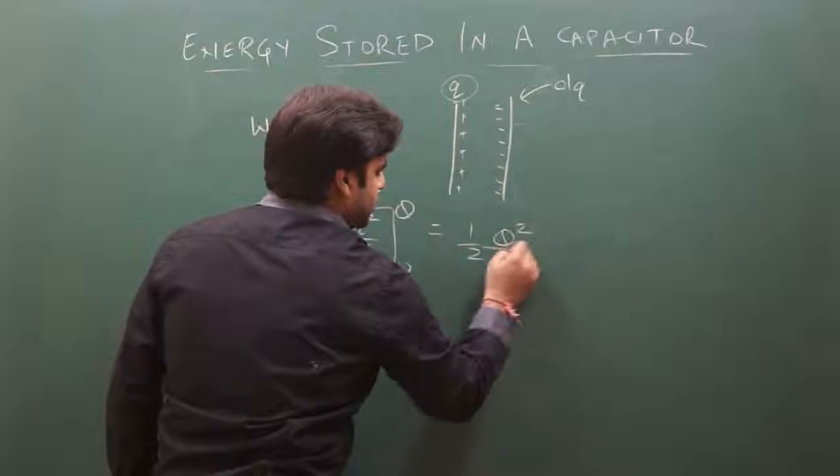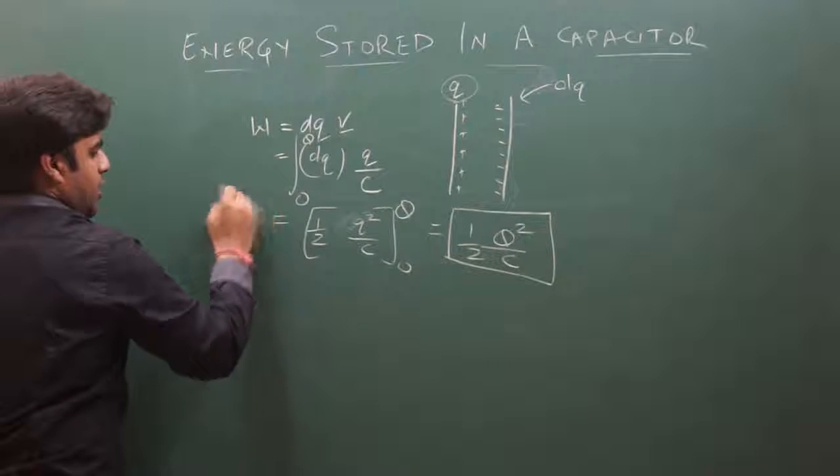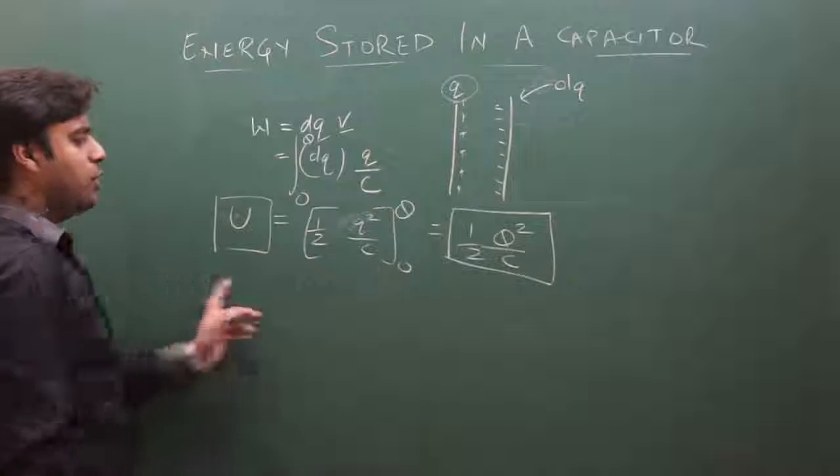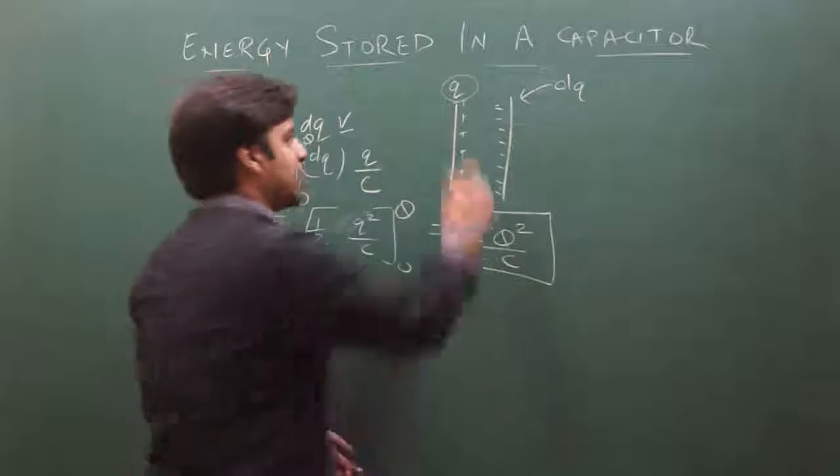This is the energy stored in a capacitor. The energy stored U equals half Q squared by C, when the capacitor is charged to Q.